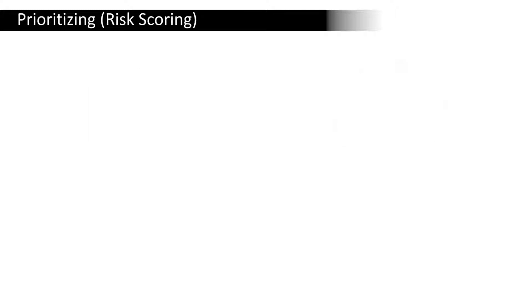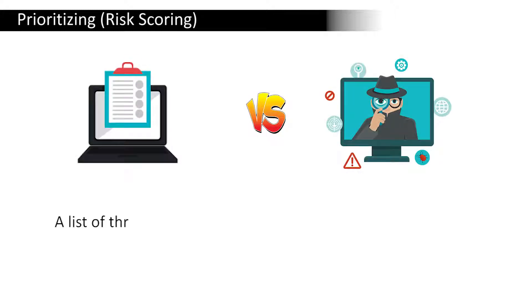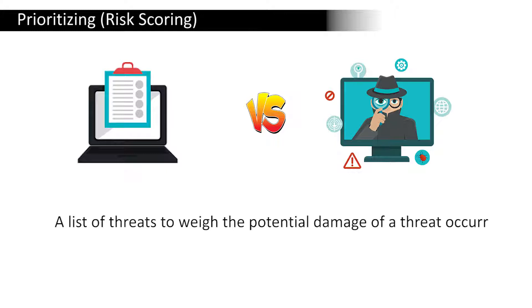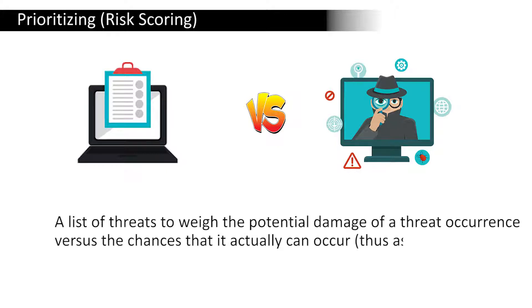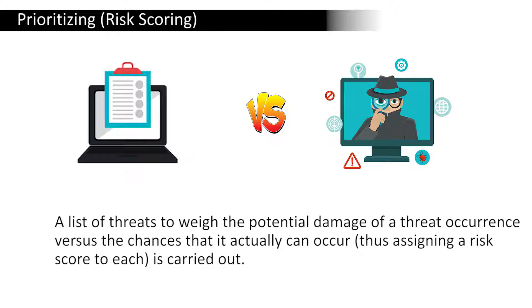The next step is prioritizing or risk scoring. This involves creating a list of threats to weigh the potential damage of a threat occurrence versus the likelihood that it can occur, assigning a risk score to each one. That is what is being carried out in this phase.